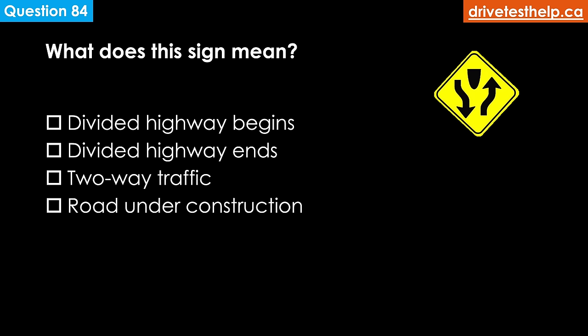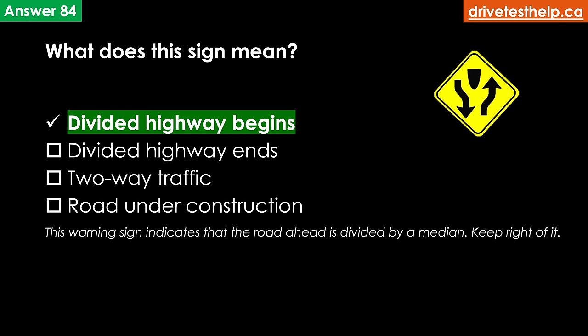What does this sign mean? Options: divided highway begins; divided highway ends; two-way traffic; road under construction. The correct answer is divided highway begins. This warning sign indicates that the road ahead is divided by a median — keep right of it.